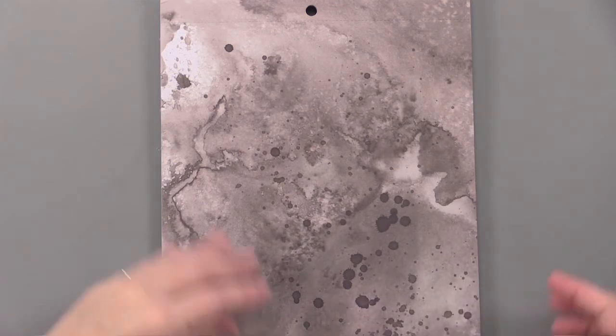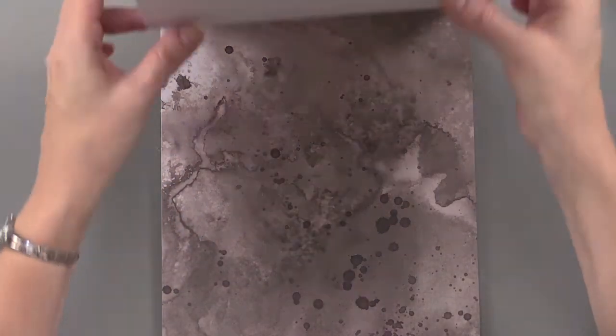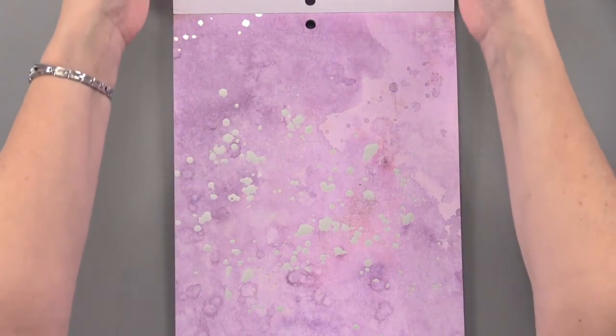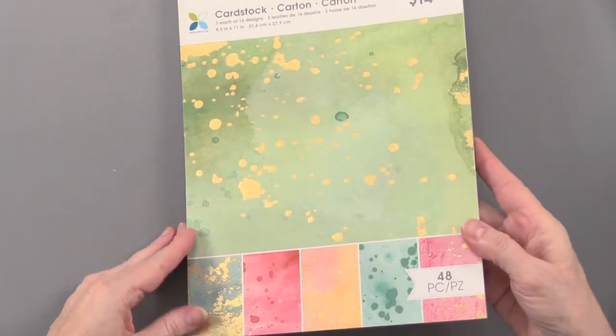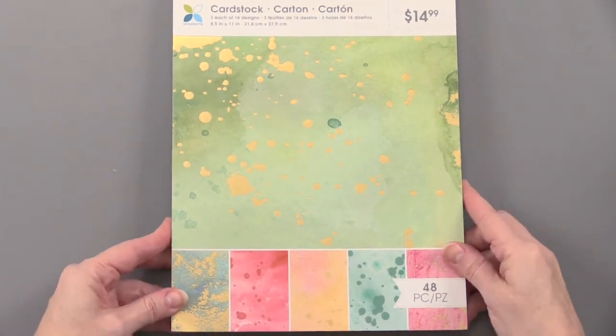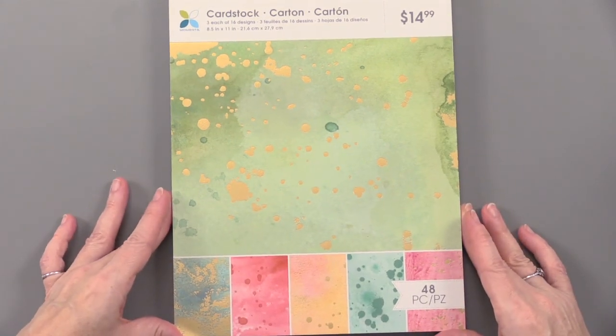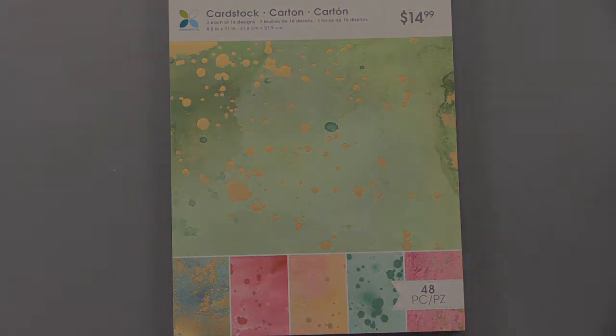So those are all of the 16 designs that come within this book. You're going to get remember three sheets of each design with gold and silver foiling and those ink spatters. It's a beautiful look. Metallic inks cardstock from Momenta.